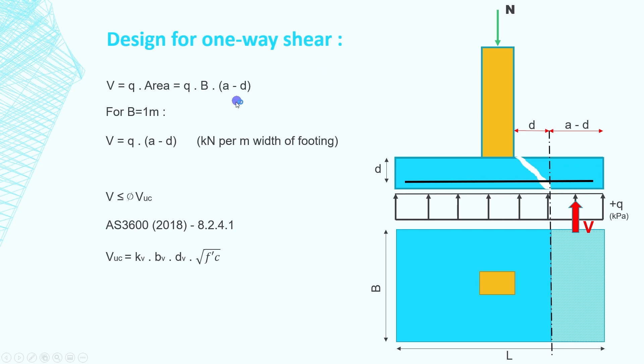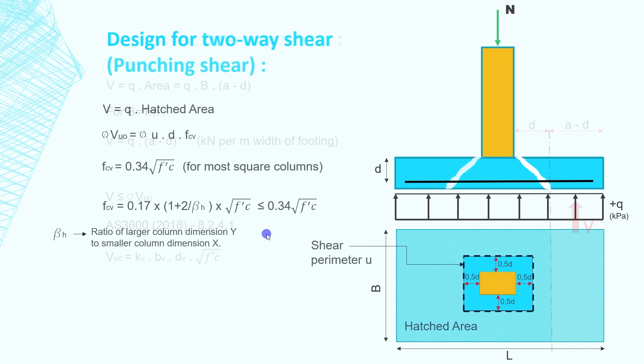The next step is the design for one-way shear. The critical section for one-way shear is taken a distance D from the face of the column. The shear force is equal to the pressure Q times area. For B equals 1 meter, V equals Q times (A minus D). Since we usually don't have shear reinforcement in pad footings, the shear capacity has to be provided by the concrete. So shear force must be equal or smaller than the factored concrete shear capacity, and if it's not, the depth of the footing will have to be increased. The shear capacity of the concrete is given by this formula in AS 3600.